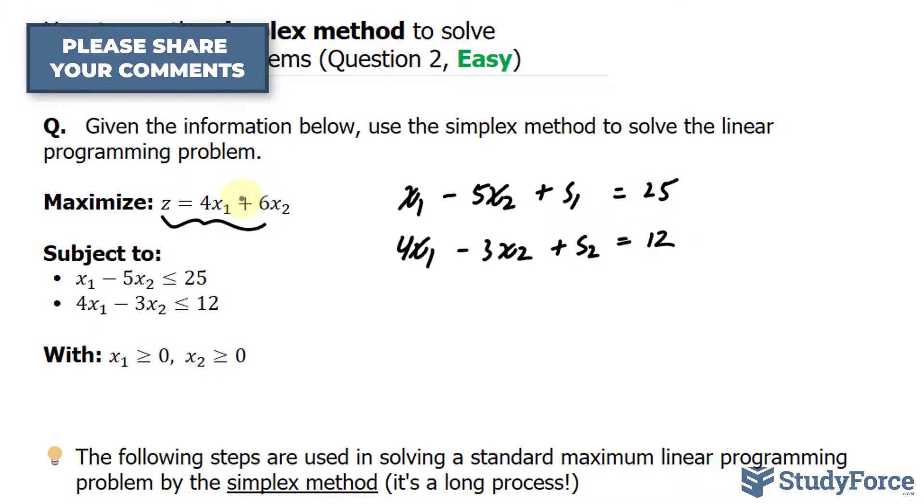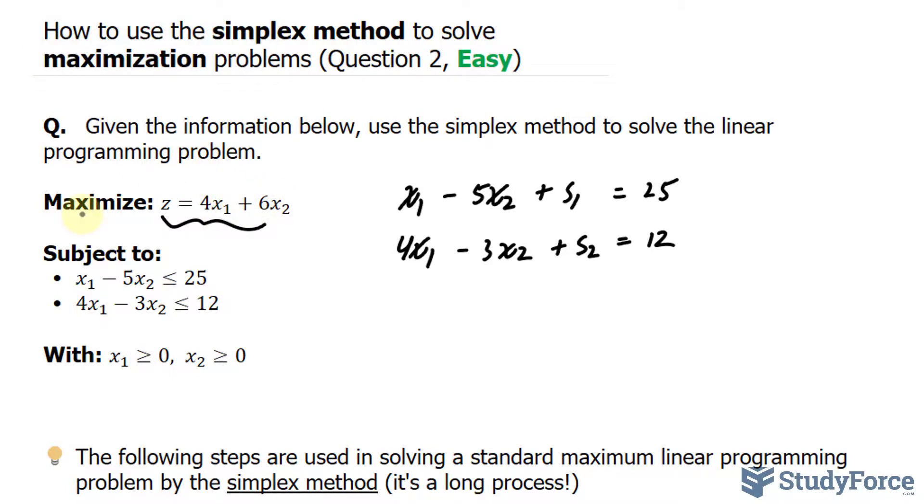And for this equation, I'll bring these two terms over to the left side. So we have negative 4x sub 1 minus 6x sub 2 and the z stays on the left side. So I'll write down plus z is equal to zero.